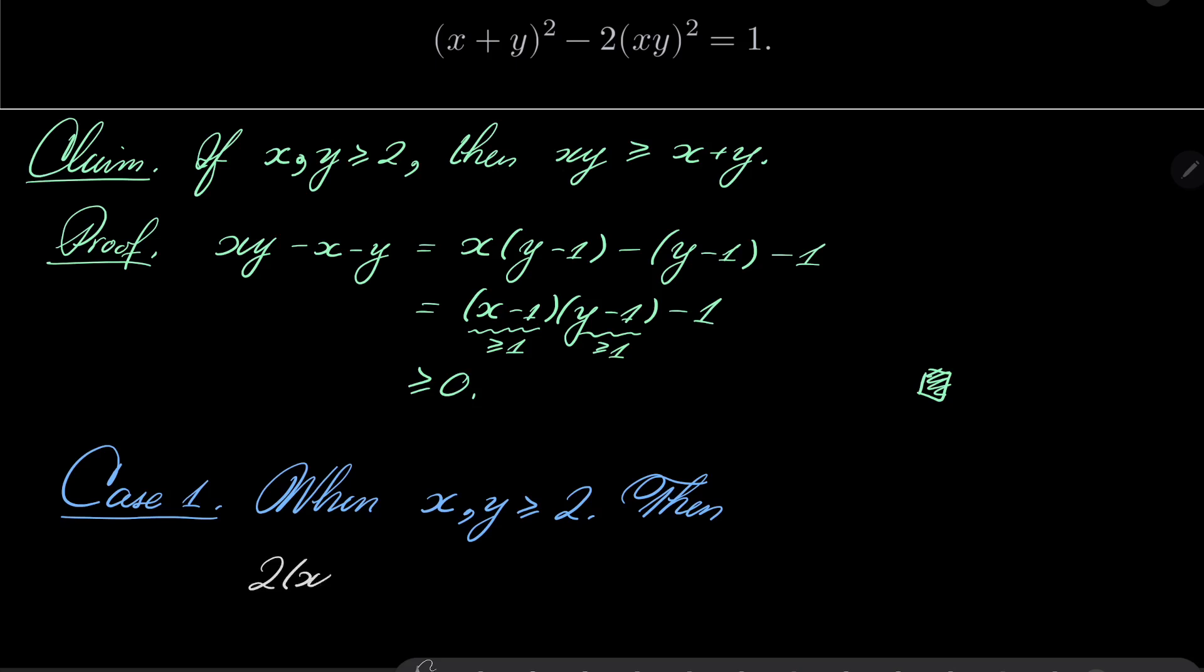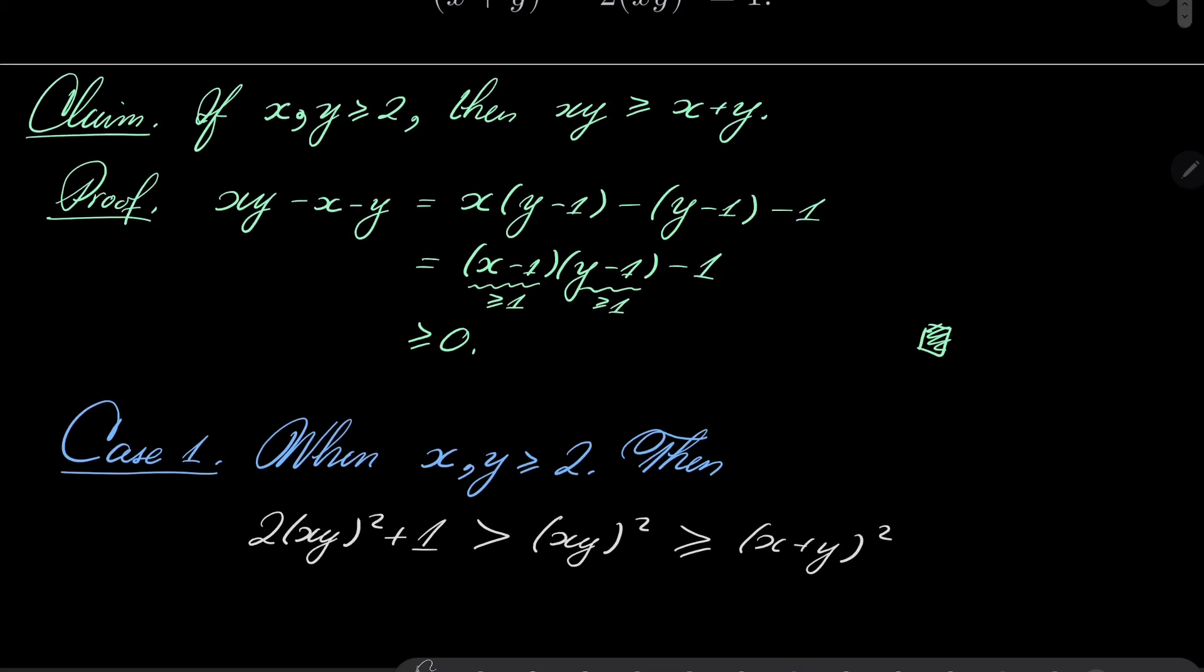Now, 2(xy)² + 1 is strictly greater than (xy)², and since we are dealing with positive numbers, (xy)² ≥ (x+y)². So, in this case, our equation has no solutions, because our equation really says that this should be equal to that, so no solutions to our equation.